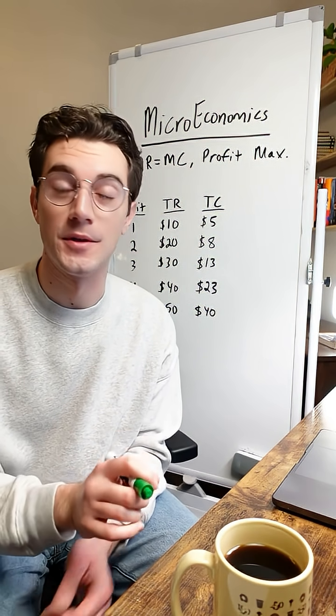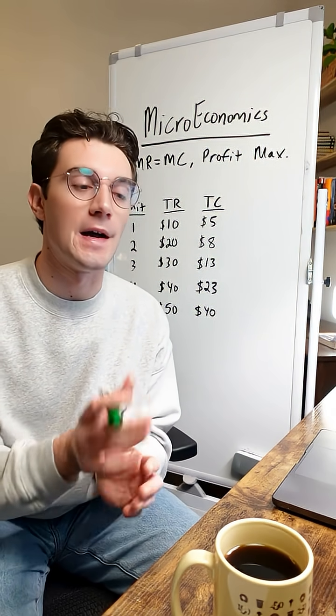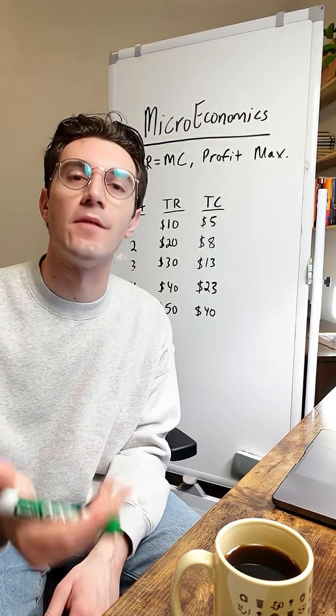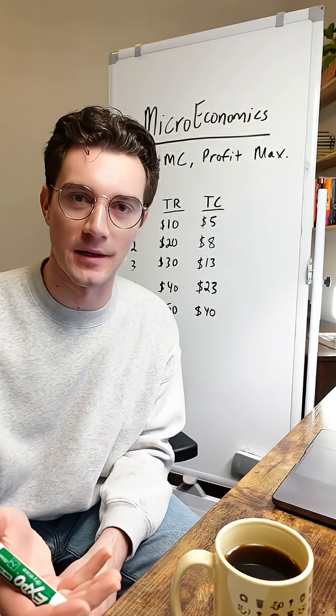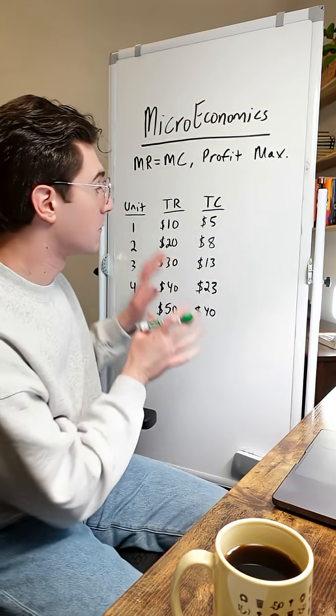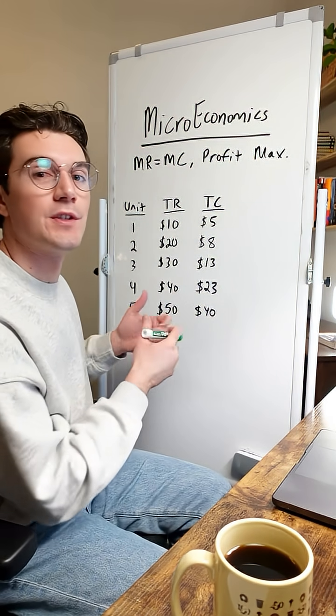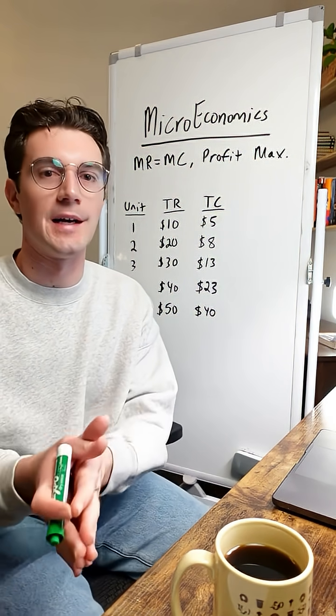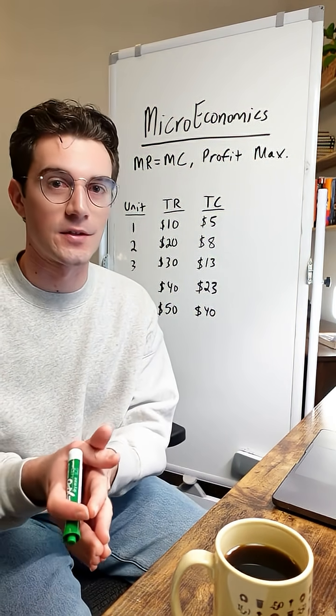For your microeconomics final exam, this is why the MR equals MC point is the profit maximizing point. I'm a tutor and we're going to walk through this first in a simple table example and then we'll apply it on the graphs.